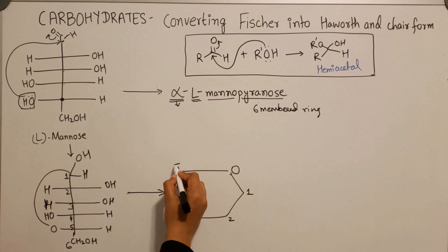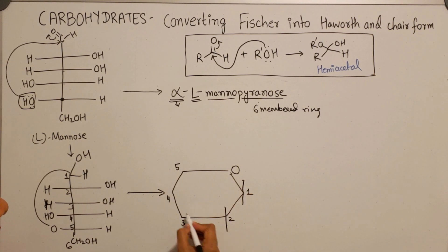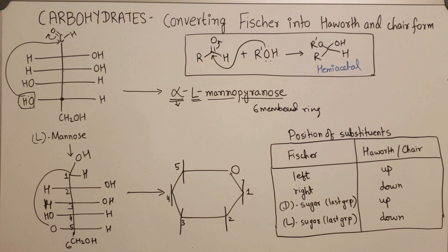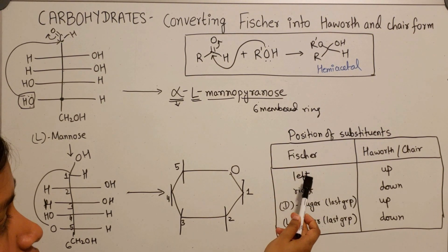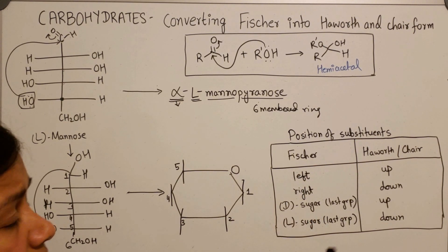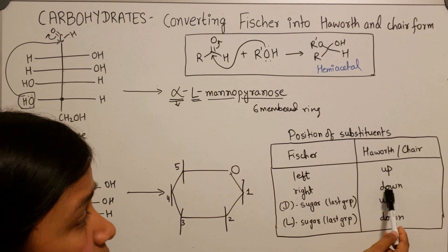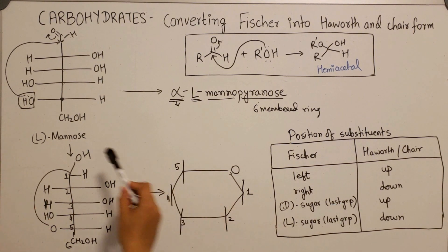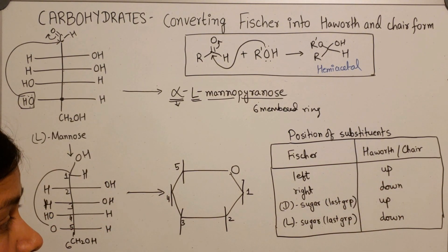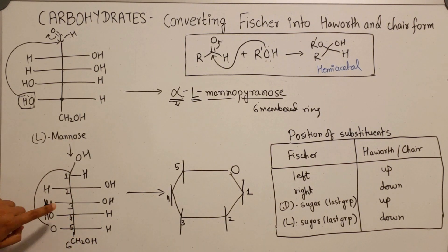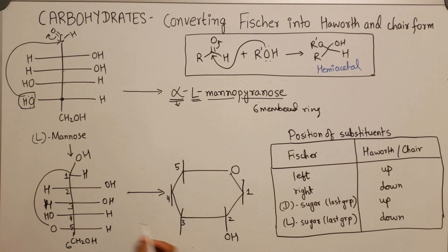The second step is to draw all the up and down bonds. In order to place the substituents in the Haworth projection, remember this rule from the table: if the substituent in the Fischer projection is on the left-hand side, it goes up in the Haworth form; if it is on the right-hand side, the substituent goes down. For a D sugar, the last group goes up in the Haworth or chair form; for an L sugar, it goes down. On carbon two, the hydroxy group is on the right-hand side, so it goes down.